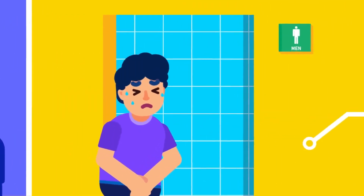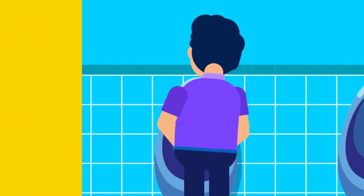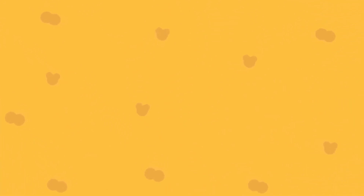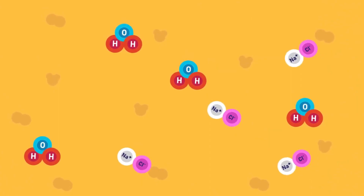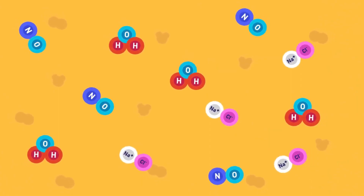The liver, together with our kidney, also excretes urea in the form of urine. The urine also contains excess water, mineral salts, and nitrogenous wastes.